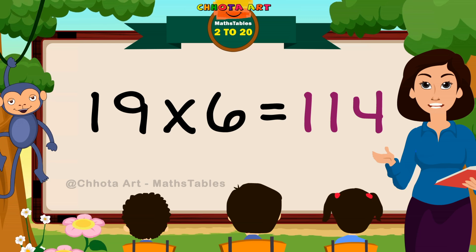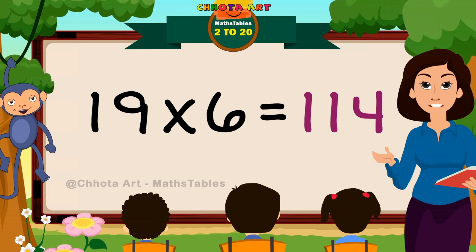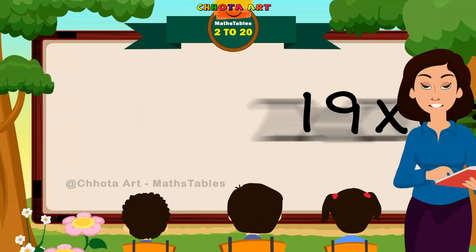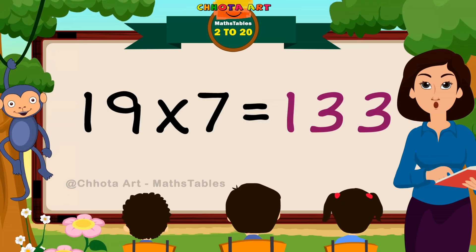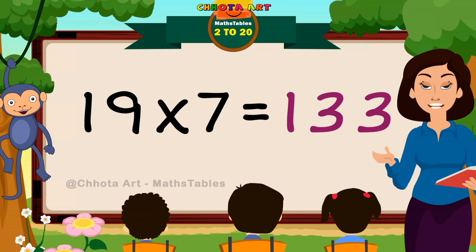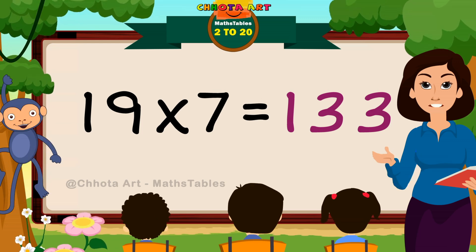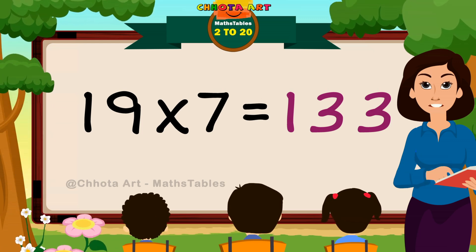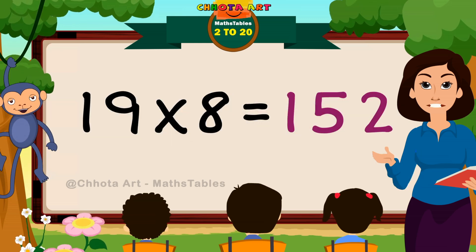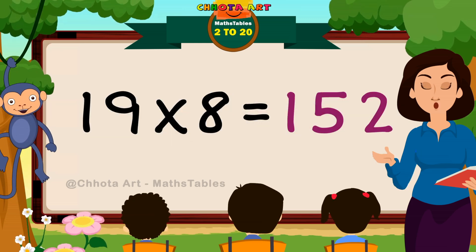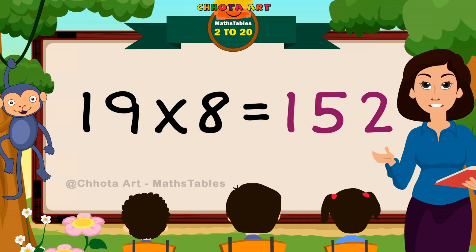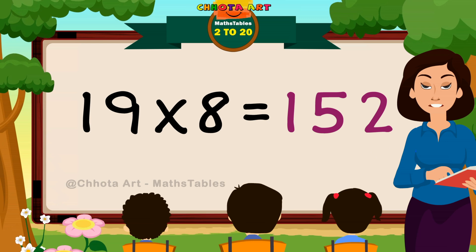Nineteen sixes are hundred and fourteen. Nineteen sevens are hundred and thirty three. Nineteen eights are hundred and fifty two.